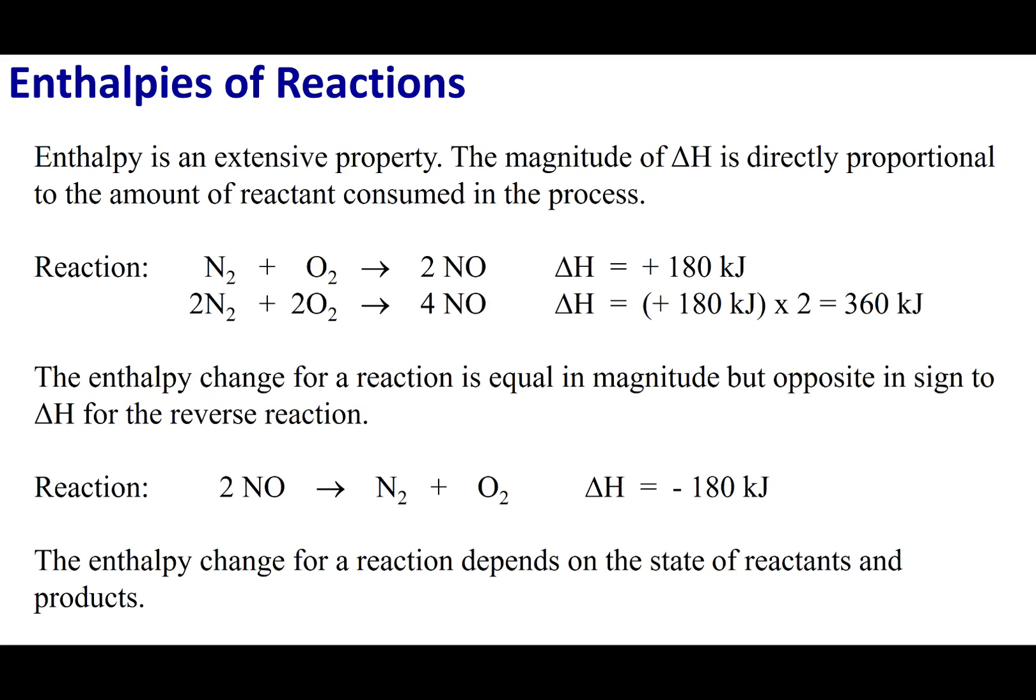One thing you should note is that enthalpy is an extensive property, and this means that the change in enthalpy is going to be proportional to the amount of material I use. In the last example, if you have 1 mole and 1 mole, you will have to combine it with 180 kilojoules worth of energy. If I were to times this reaction by 2, so I'm reacting 2 moles and 2 moles, well I'm going to need twice as much energy for this reaction to go. When you times a reaction by 2, you're going to have to times the enthalpy by that same number.